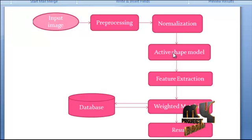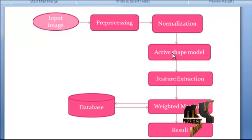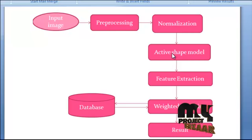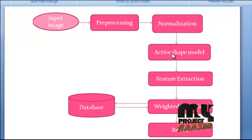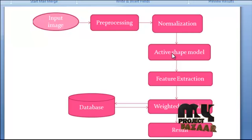After the normalization process, we move on to Active Shape Model. Active Shape Models are statistical models of the shape of an object which iteratively deform to fit an example of the object in a new image. The shapes are constrained by the Point Distribution Model, a statistical shape model, to vary only in ways seen in the training set of labeled examples. The shape of an object is represented by a set of points, and the ASM algorithm aims to match the model to a new image.